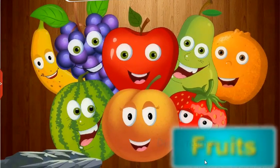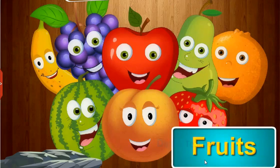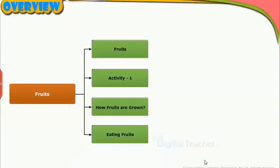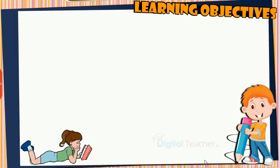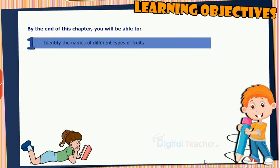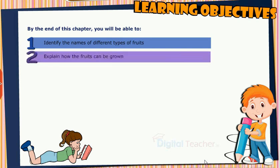Welcome to the chapter, Fruits. This slide presents the overview of the chapter. Learning Objectives: By the end of this chapter, you will be able to identify the names of different types of fruits and explain how fruits can be grown.